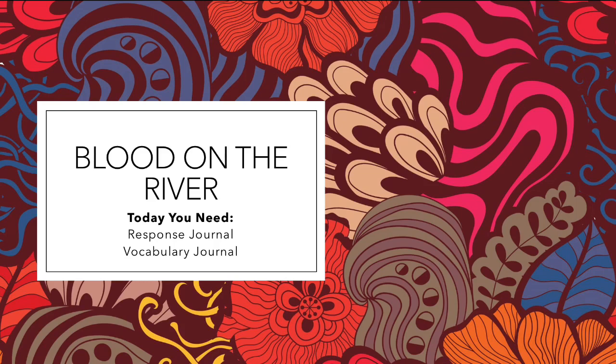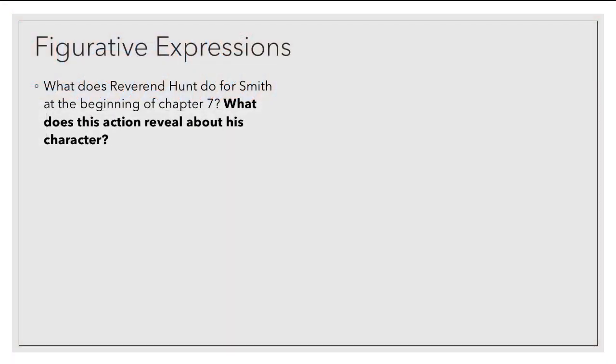All right, kids, so we're going to kick off with our first lesson for Blood on the River. This is going to cover chapters 8, 9, and 10. What you should have in front of you for this lesson is your response journal and your vocab journal.